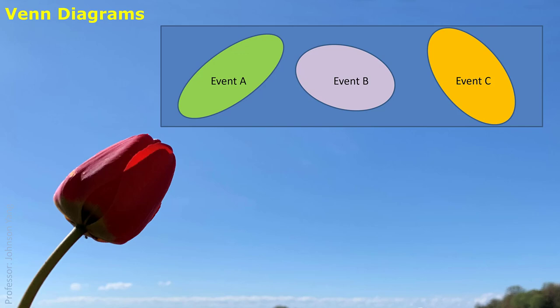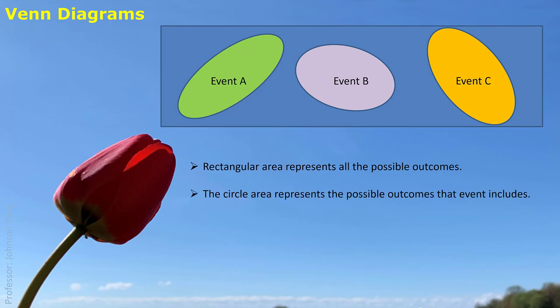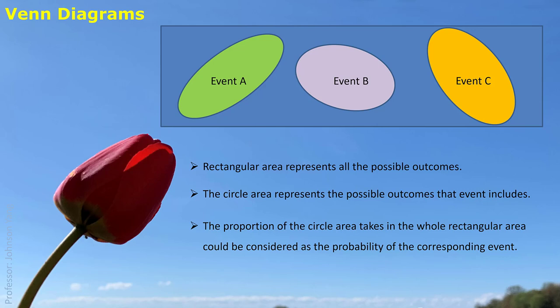We can use Venn diagrams to describe the relationship between events and to describe probability in a geometrical way. The rectangular area represents all the possible outcomes, and each circle area represents the possible outcomes that an event includes. We suppose every possible outcome has an equal chance to appear.